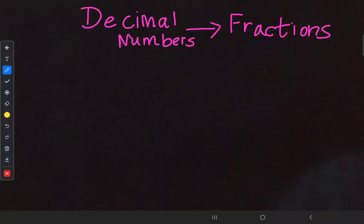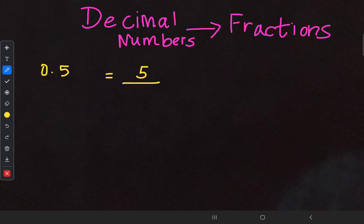This is an easy topic — decimal numbers should be converted as fractions. Let's take the number 0.5. The task is simple: write the numerical value on top. Don't consider the zero, as it has no value here — only consider the five. In the denominator, you can see only one digit after the decimal point, so the denominator should hold only one zero. Before that zero, put a one: 5/10. This is the easiest way to convert decimal numbers to fractions.